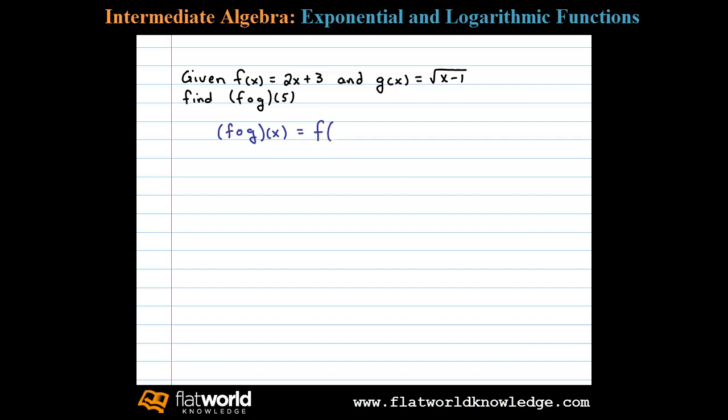Here f is a linear function, so we have 2 times x plus 3. In this case we have to substitute g into f, so we'll write 2 times parentheses plus 3. That's f of x in which we're going to substitute g of x, or the square root of x minus 1.